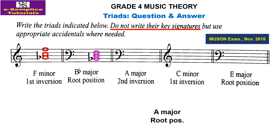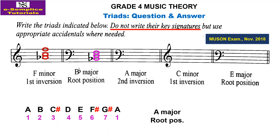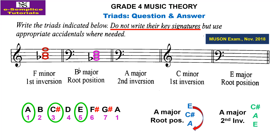Next is A major, second inversion. The notes in A major have key signature accidentals: F sharp, C sharp, and G sharp. Constructing A major root position gives A, C sharp, and E. The question requires second inversion, meaning the fifth becomes the root. So second inversion will be E, A, then C sharp. Let's put this on the stave: E first, A, and C sharp.